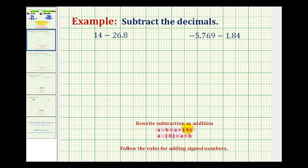Looking at this first example of 14 minus 26.8, this is equivalent to 14 plus negative 26.8. Right away, as an addition problem, we should be able to recognize that the negative is going to outweigh the positive, and therefore the sum will be negative.